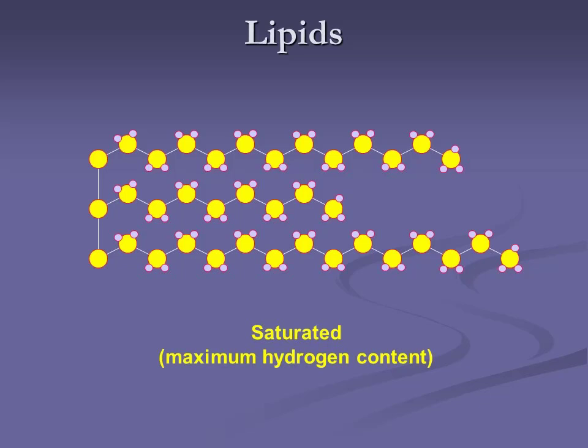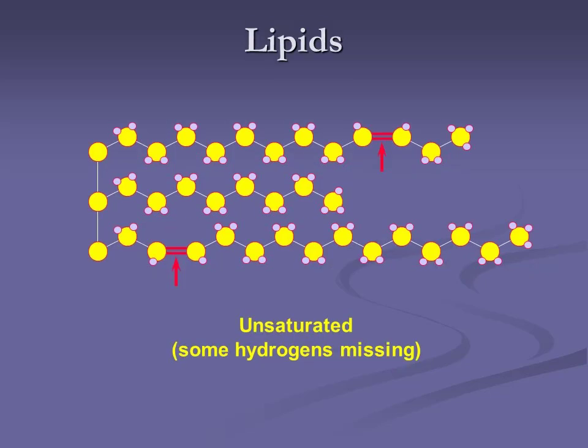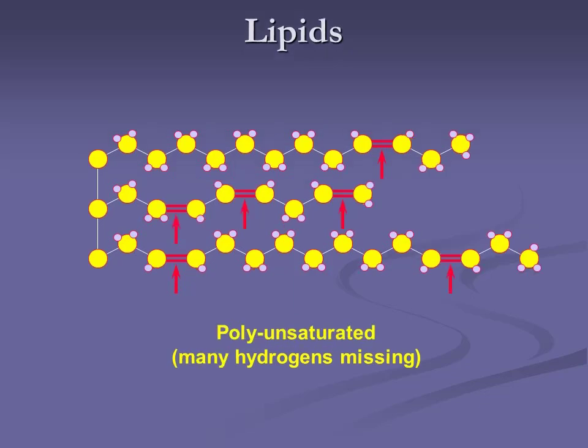Can carbons only have single bonds? They can also have double or triple bonds. If we throw in a couple of double bonds, now we've got some carbons that aren't saturated with single bonds — that's unsaturated fat. And if we throw in a bunch of double bonds, having many hydrogens missing so they're filled with double bonds, that's polyunsaturated fat.